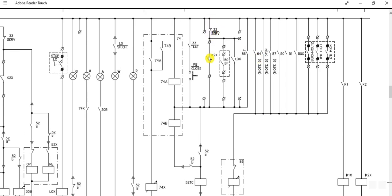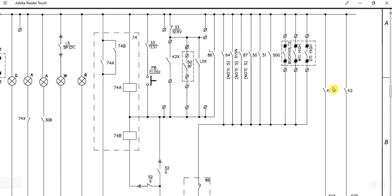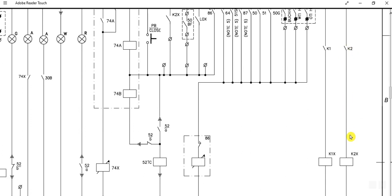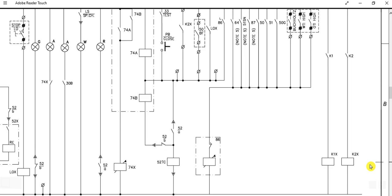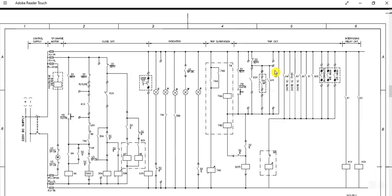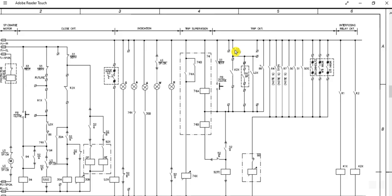When the breaker is in service position, follow this path. K2X is the trip command from DCS or PLC — this is for remote trip. The interposing relay circuit is here: K1 is for closing the breaker and K2 is for tripping. There are also contact multiplication relays K1X and K2X. If K2X gets energized, this normally-open contact closes, and if the breaker is in service position, it will energize the 52TC trip coil and the circuit breaker will be tripped.